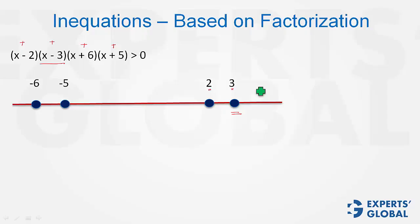At each of these nodes, please understand, the value would be 0, because one of these terms would become 0, and between 2 and 3, what will happen?